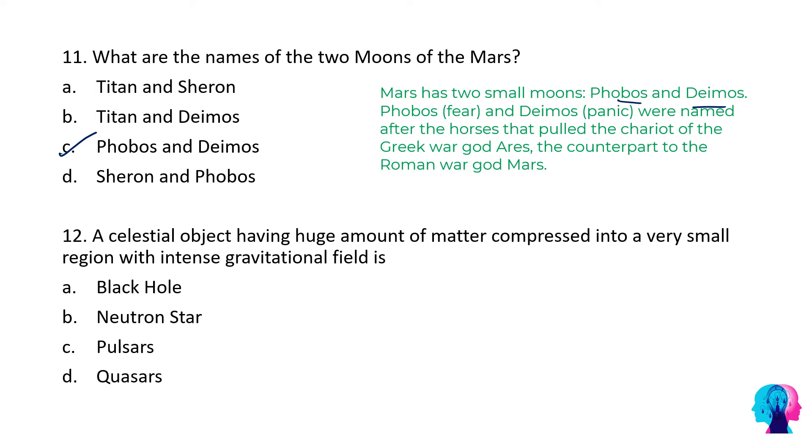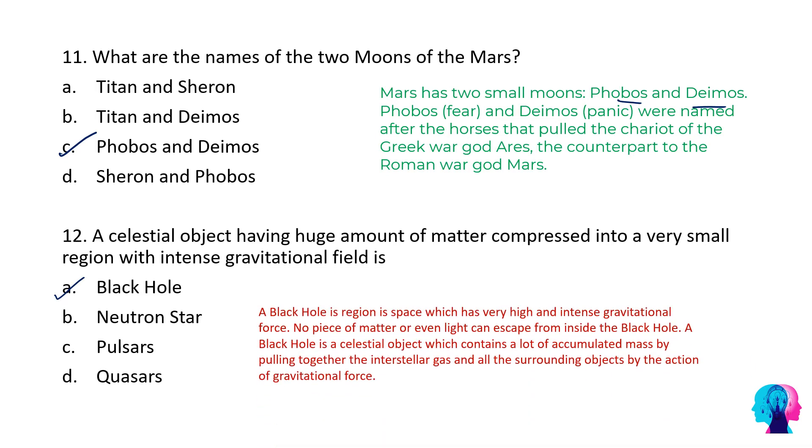Next question: A celestial object having huge amount of matter compressed into a very small region with intense gravitational field is? The answer would be black hole. What is a black hole? A black hole is a region in space which has a very high and intense gravitational force. No piece of matter or even light can escape from inside a black hole.